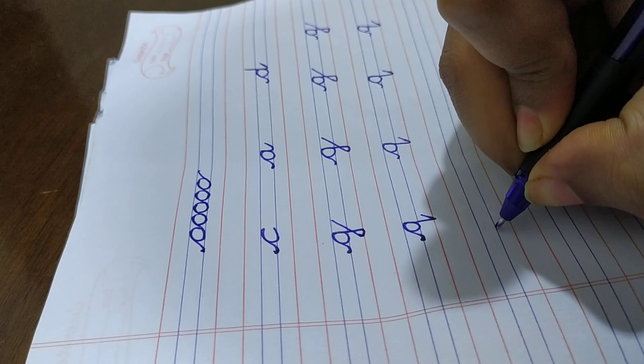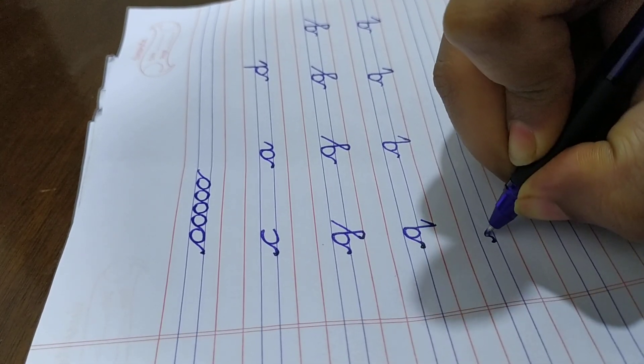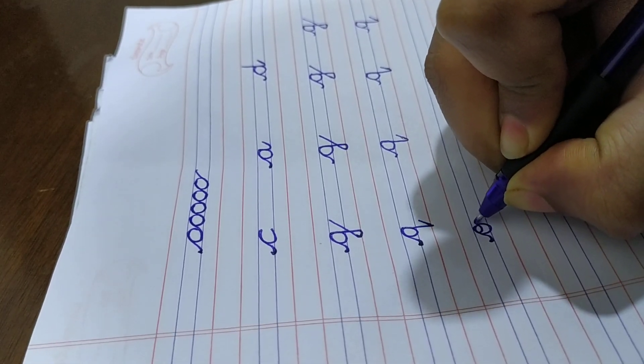Next letter is o, small cursive o. Make a small circle like this.